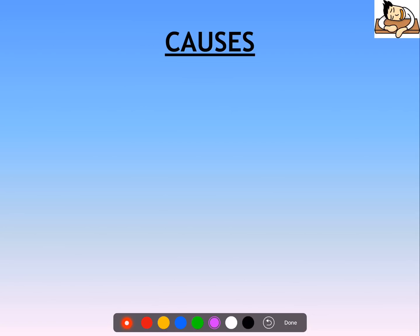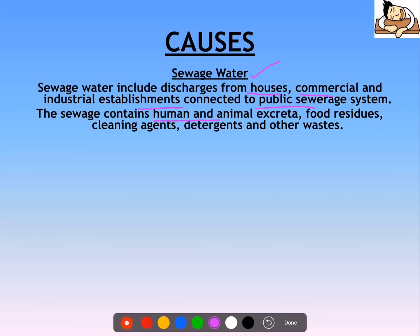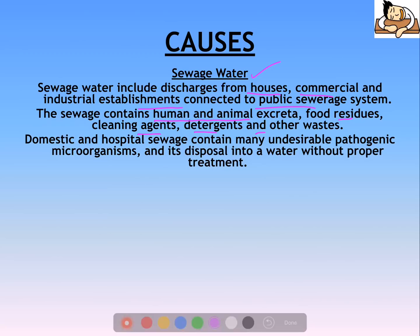Coming to the causes of water pollution — sewage water is an important cause. It includes discharges from houses, commercial and industrial establishments connected to the public sewerage system. It contains human and animal excreta, food residues, cleaning agents, detergents, and other waste — all polluting water bodies. It may also contain pathogenic microbes, and its disposal into water without treatment can lead to a great deal of water pollution.